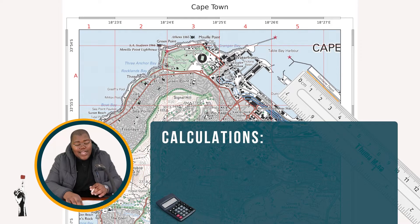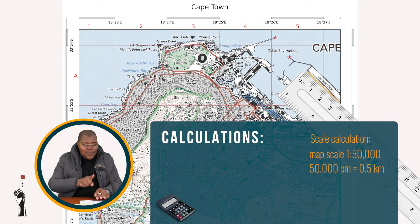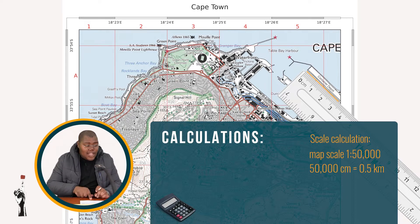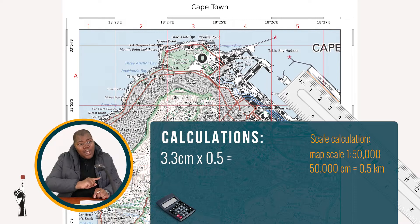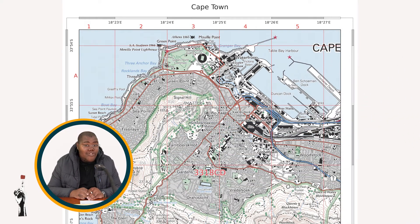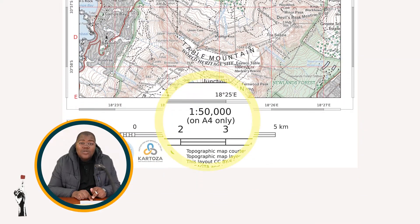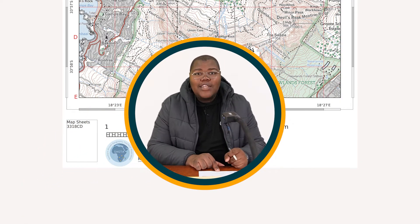You take your 3.3 centimeters, you multiply it by your scale as explained in the previous video, and that gives you 0.5. If you take 3.3 and multiply it by 0.5 to turn it into kilometers, it then becomes 1.65 kilometers. We are multiplying by 0.5 because the scale of this map is 1 to 50,000. If you revisit that video, you will see how we get to 1 to 50,000.